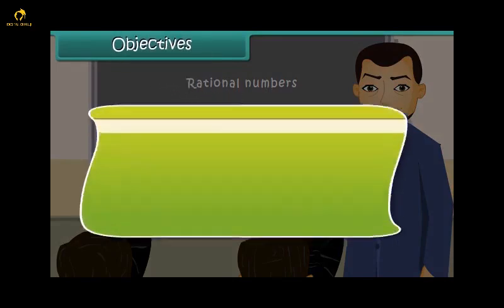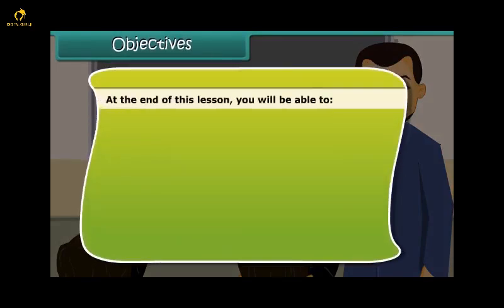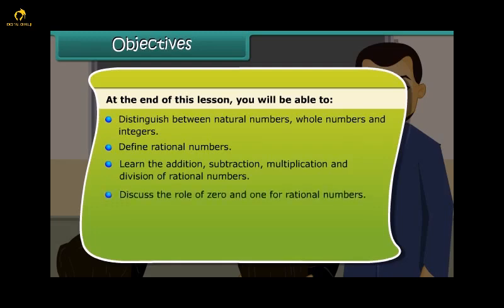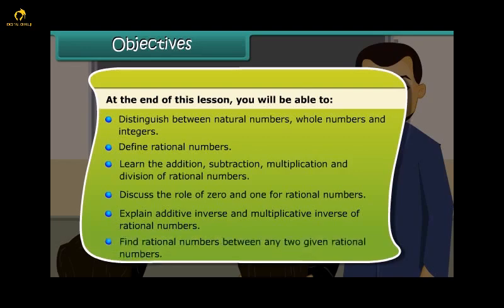Objectives. At the end of this lesson, you will be able to distinguish between natural numbers, whole numbers and integers, define rational numbers, learn the addition, subtraction, multiplication and division of rational numbers, discuss the role of 0 and 1 for rational numbers, explain additive inverse and multiplicative inverse of rational numbers, and find rational numbers between any two given rational numbers.